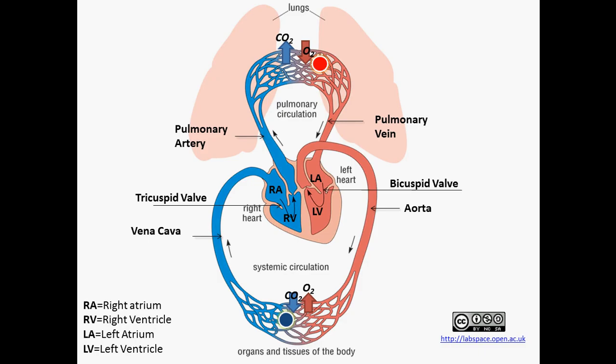The systemic circulation is the circulation involved between the heart and the rest of your body organs and tissues. This circulation is necessary to distribute oxygen to all of your tissues and organs and to pick up their waste product, which is carbon dioxide, and get it recycled again through the pulmonary circulation.